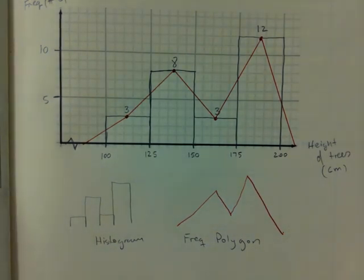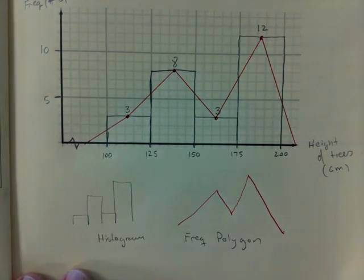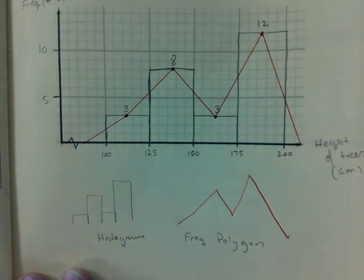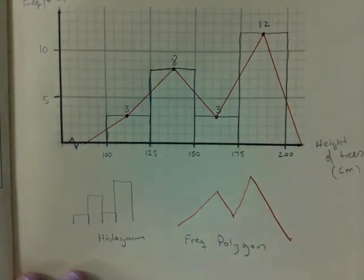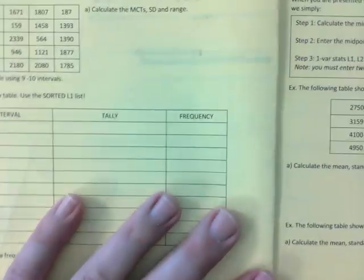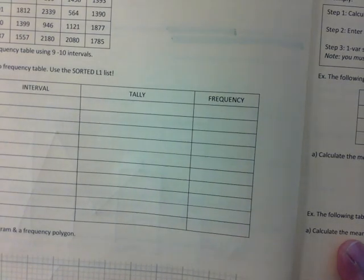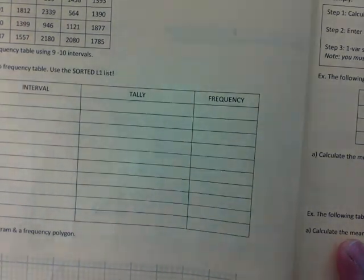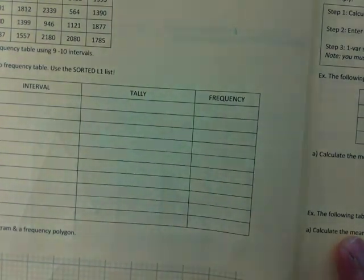That's it. That's the headache is not the graph. The headache is making the frequency polygon. Sorry, frequency table. That is the headache. But not really. You're champs. You're going to be just fine. You're smart cookies. So, let's make one. And I will guide you.